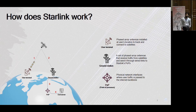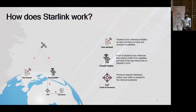Ground stations have wired connections to Starlink's points of presence, and they pass all of the user traffic from the ground station to the POP over wired connections. Point of presences are physical network interfaces where user traffic is passed to the internet backbone, and from the backbone all this traffic goes to the end server. So essentially your traffic leaves the user terminal, goes to the satellite, from there to the ground station, then over a wired connection to the POP, then to the end server — and on the way back it takes the same route.